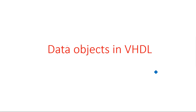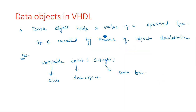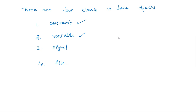In this video I am continuing the data objects which we started in the previous video. A data object holds the value of a specified type — type maybe integer, float, or any type. There are four different types of classes in data objects: constant, variable, signal, and file. Regarding constant and variable we have discussed in the previous video along with its examples.